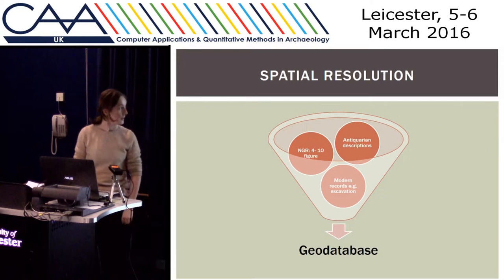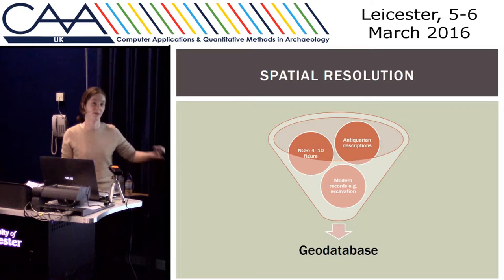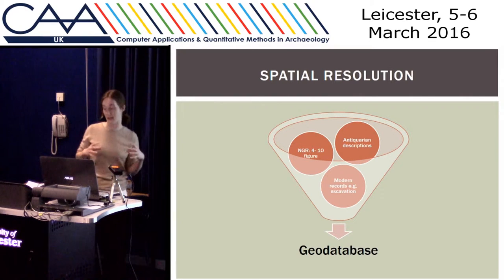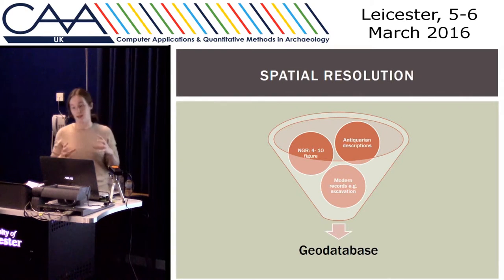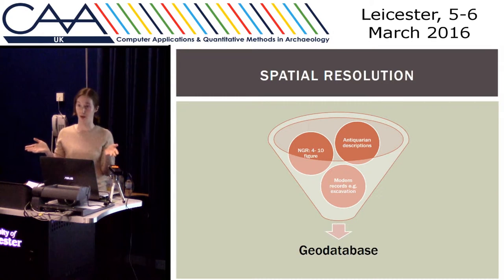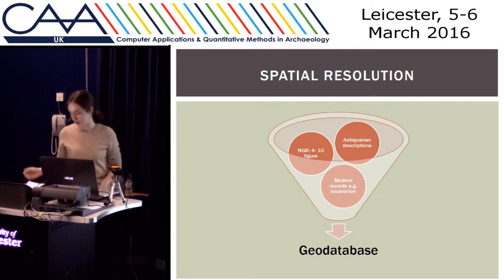This is what is going into my geodatabase. The issue is I'm dealing with things like antiquarian descriptions, national grid references of varying degrees of accuracy, and modern excavation records all coming together — and they're all different. Some have no map reference but a really good description so I can locate them. Others have very vague descriptions and can't be closely reconstructed at all.